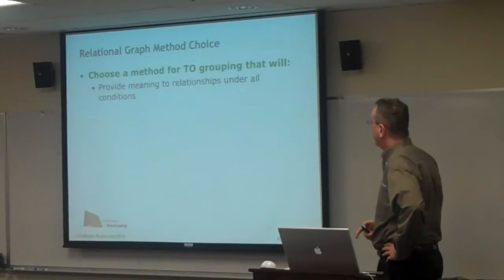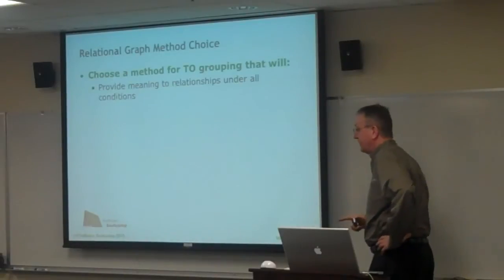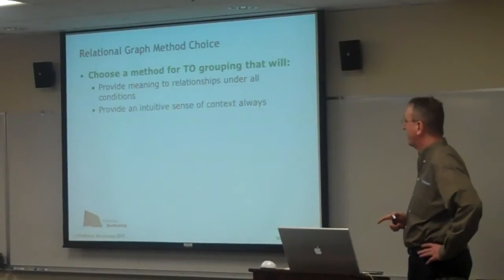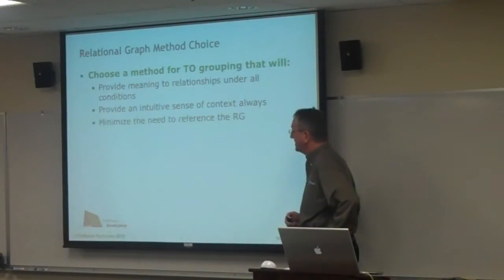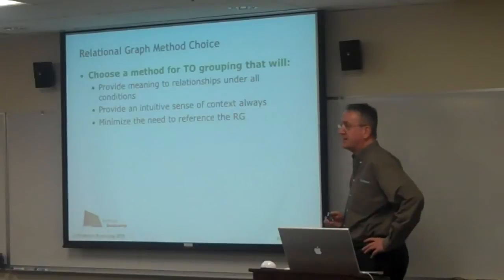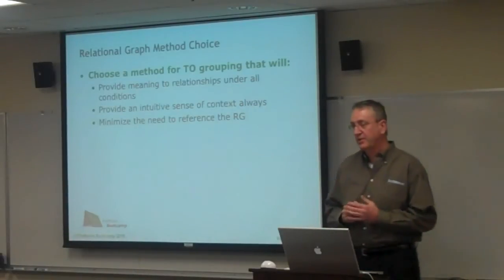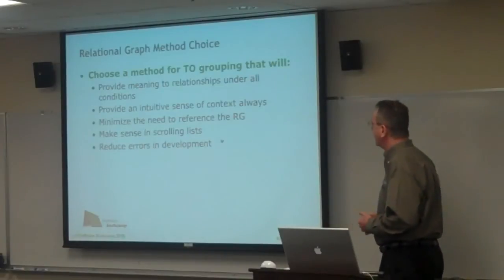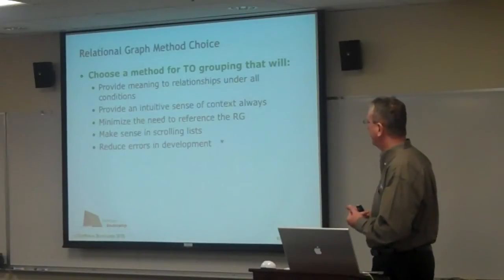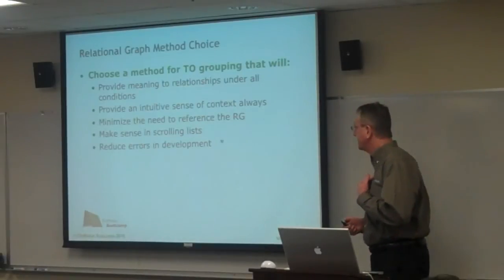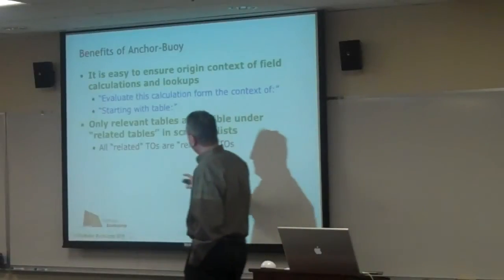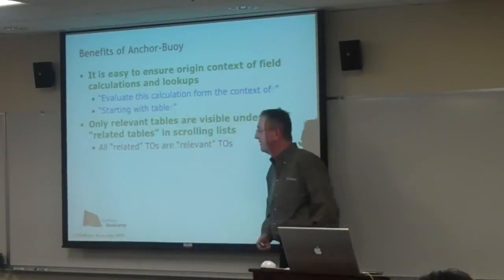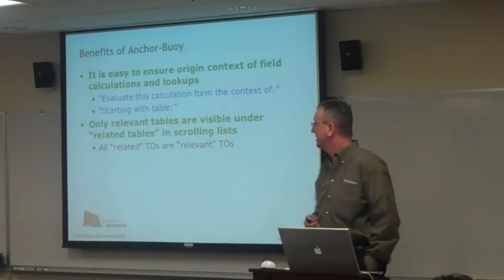If we're going to choose a relational graph method, we want one that gives meaning to available relationships under all conditions, that's intuitive no matter the context. We want to minimize the need to reference the graph — keeping it in your head without cognitive overload or having to rush back to check the graph or document it on paper. It should always make sense in scrolling lists and reduce errors from getting the wrong data. What you really want is where all related data is also relevant data — those are two key words to the concept.